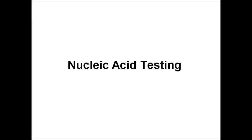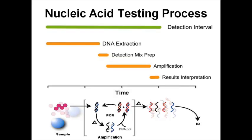We're now going to change gears and talk about how we test for nucleic acids, covering a variety of past, current, and future detection methods. A typical nucleic acid testing process involves about four steps: first, DNA extraction; then preparing the reagents or detection mix; followed by some form of amplification — in this case PCR, or polymerase chain reaction; and lastly, results interpretation to identify specific sequences or regions of interest.